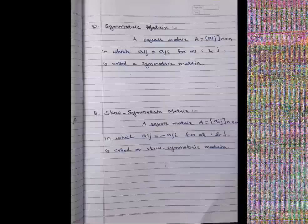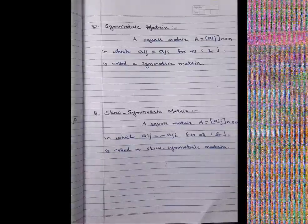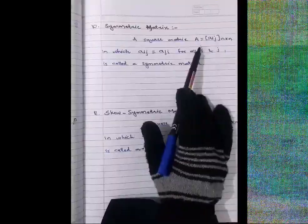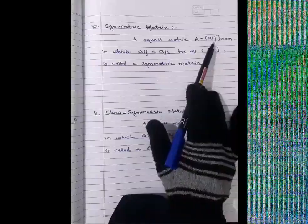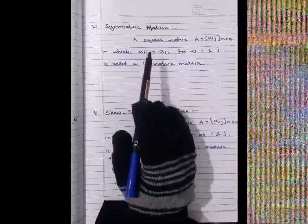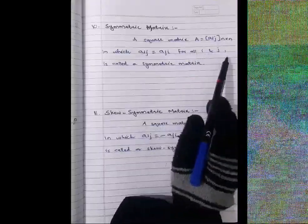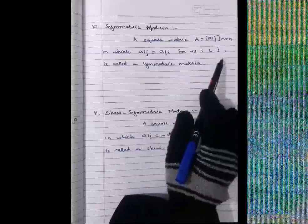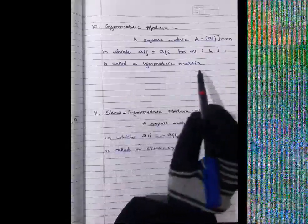Type number 10 is the symmetric matrix. A square matrix A = [Aᵢⱼ] of order n×n in which element Aᵢⱼ equals Aⱼᵢ for all i and j is called a symmetric matrix. There are two conditions: it is a square matrix, and every element Aᵢⱼ equals its transpose counterpart Aⱼᵢ.